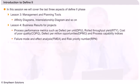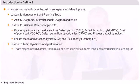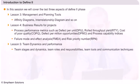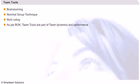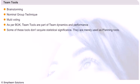Finally, in Lesson 5, we will look at the team dynamics and performances. We shall discuss the team stages, their roles and responsibilities, the tools used, and the communication techniques adopted in the process. The various team tools that are used are brainstorming, nominal group technique, and multi-voting. The ASQ-CSSGB body of knowledge specifies that the team tools are part of team dynamics and performance. We will discuss them in advance because we will come across them in various team tools.